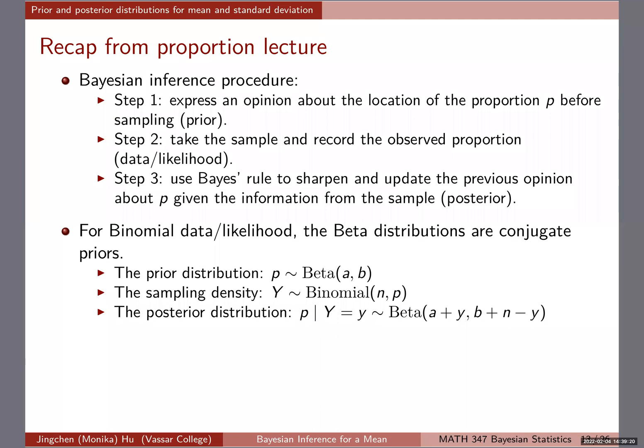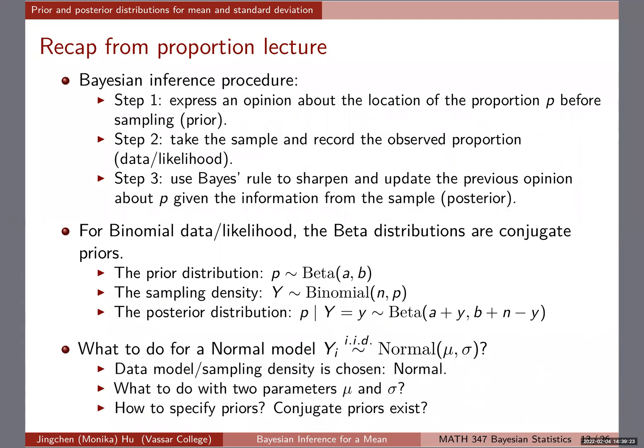This is the review. We have Yᵢ i.i.d. normal(μ,σ). Sometimes people write normal(μ,σ) or normal(μ,σ²). People always use σ to represent the standard deviation, so don't get confused. σ is the standard deviation, σ² is the variance. They're really talking about the same normal distribution. I'll try to be consistent, using μ and σ to represent the mean and standard deviation.